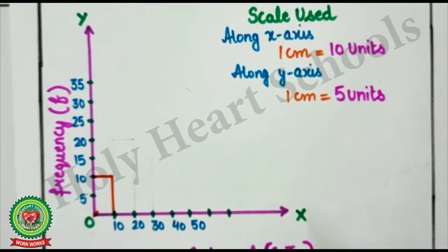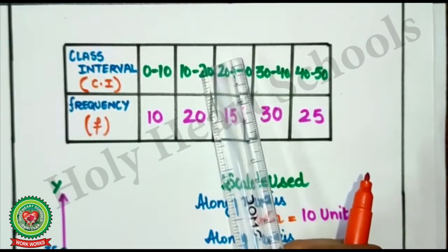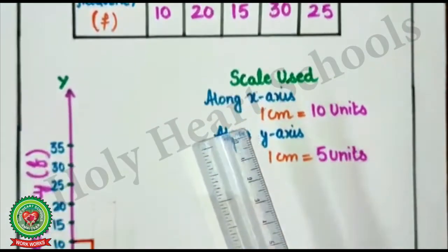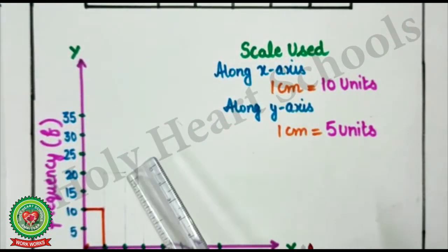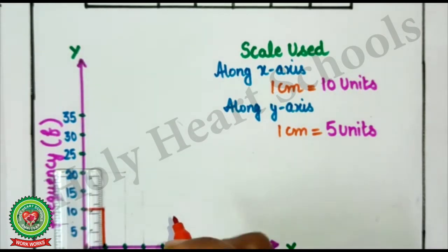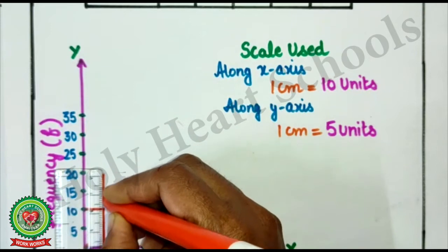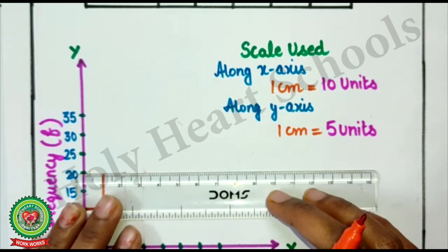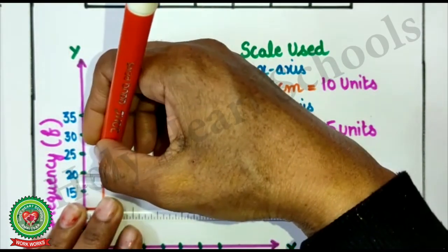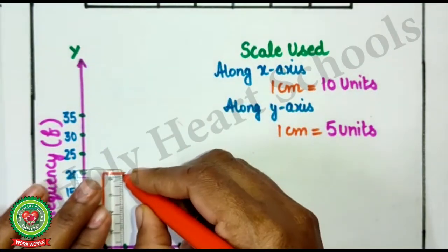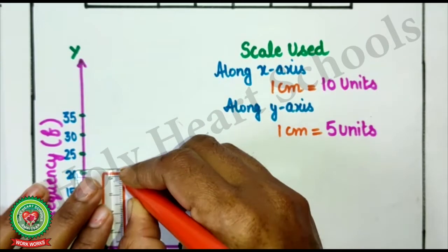Now, see the second bar. 10 till 20. Height is 20. Frequency given is 20. So, height of the bar will be 20. Now, you will not leave any space between. Here, you will continue from here only. Here, you will move till 20. From 20. Here, you will mark. Bar of 1 cm. And join it at 20.